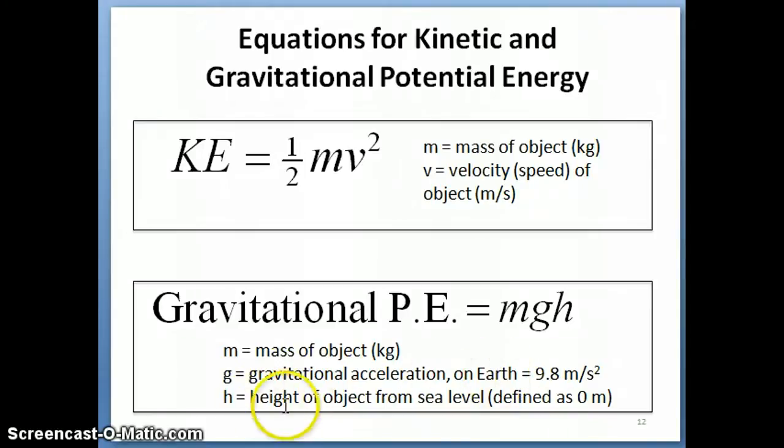The height of the object is represented as letter h here. And really, in this case, when we're talking about height, we're talking about the height from sea level, right? So we define zero as the sea level or surface of the Earth at the sea level, and then everything else is measured relative to that point. And remember, the definition of potential energy is energy that an object has relative to a specific reference point. So in this case, our reference point for gravitational potential energy is sea level.